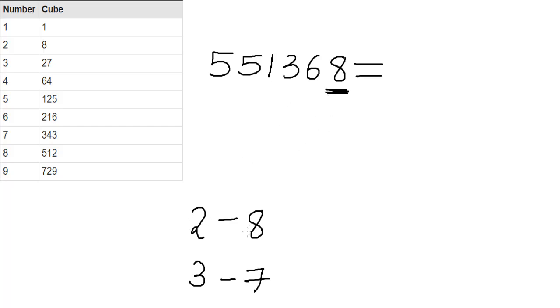So as we saw that 8 forms a pair with 2, the cube root of this number will have its unit's digit as 2. Then what we do is we strike off the last 3 numbers which is 368 and then we focus on this number which is 551.